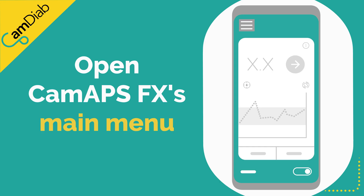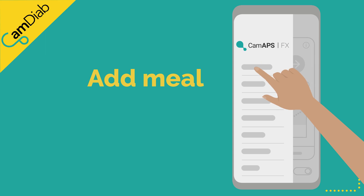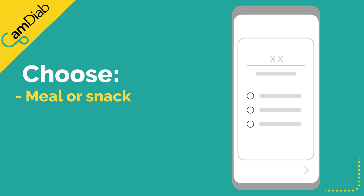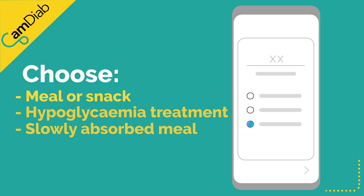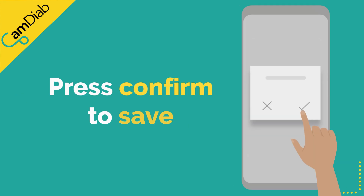To use the add meal function, open the CAM APS FX's main menu and tap on add meal. You will be given three options to choose from: meal or snack, hypoglycemia treatment, or slowly absorbed meal. Tap on the amount and use the keypad to enter the grams of carbohydrate, and press confirm to save.